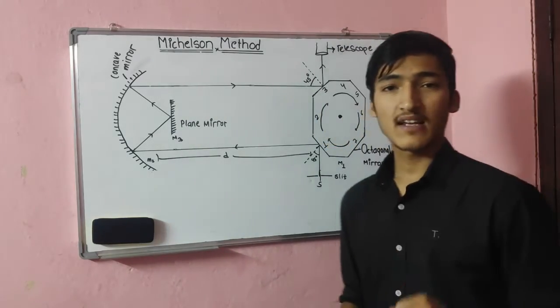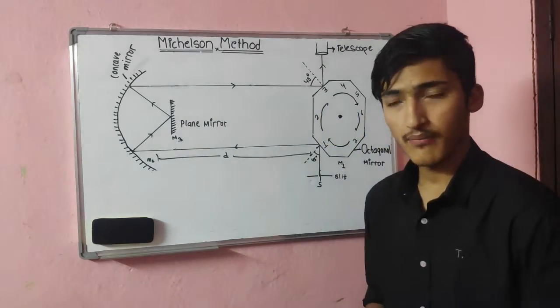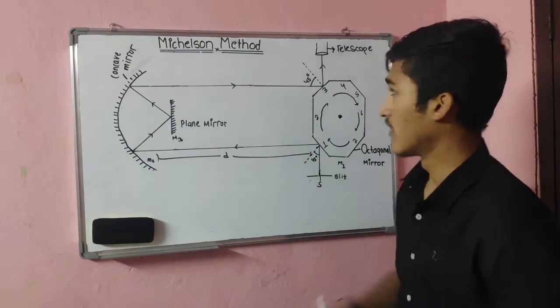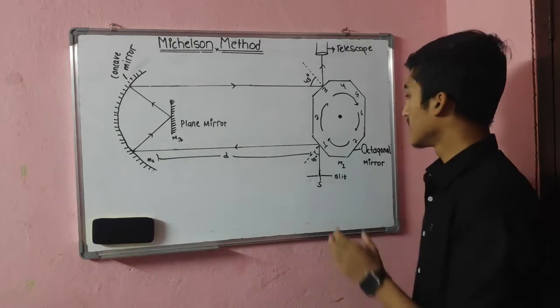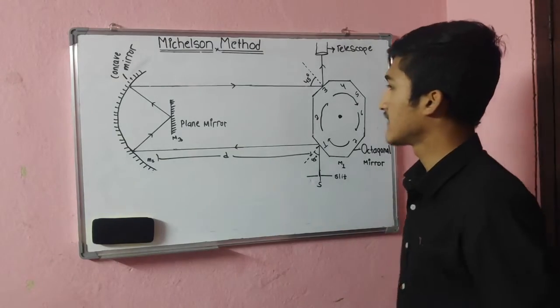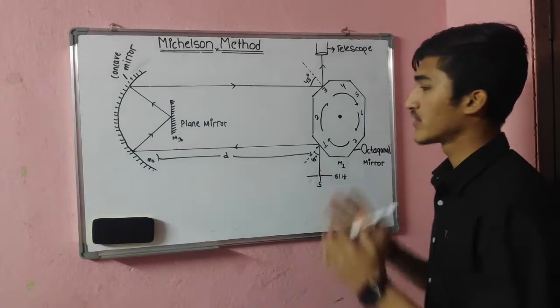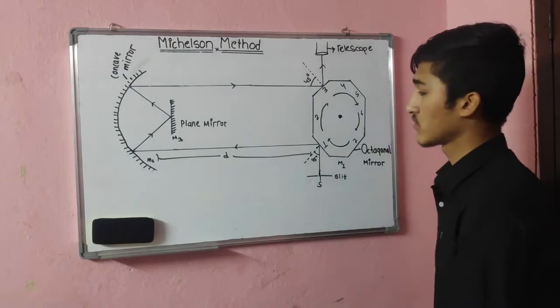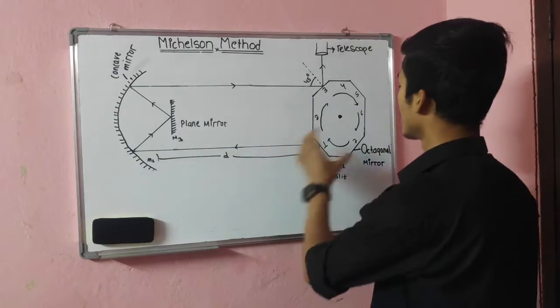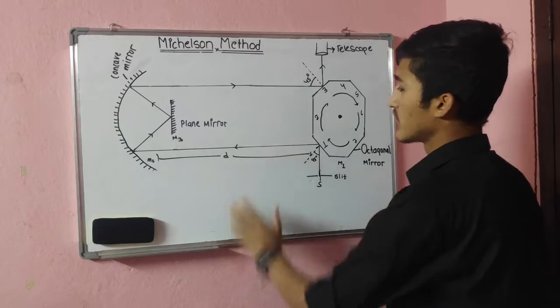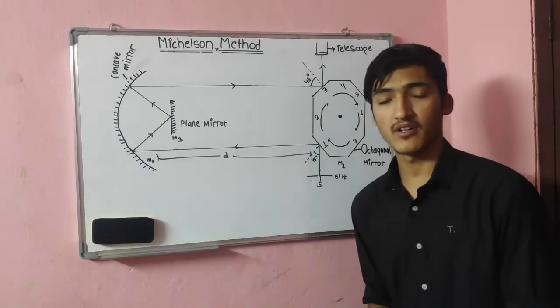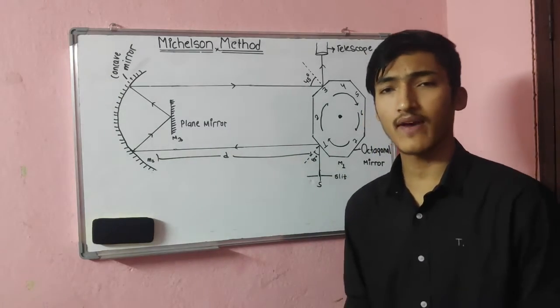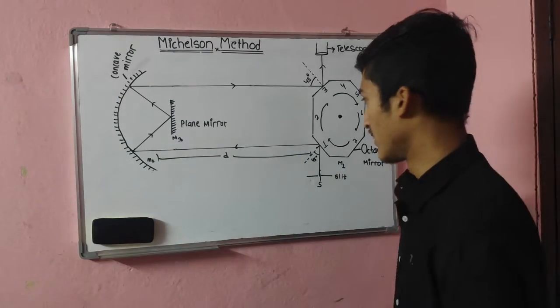In the original experiment, Michelson carried out his experiment between two mountains, so the distance between these two mirrors was measured in kilometers — about 35 kilometers.